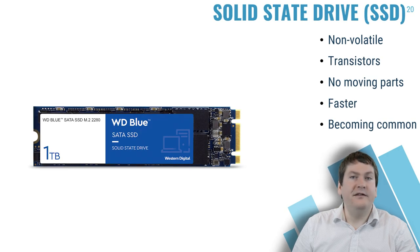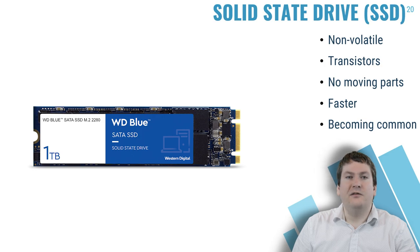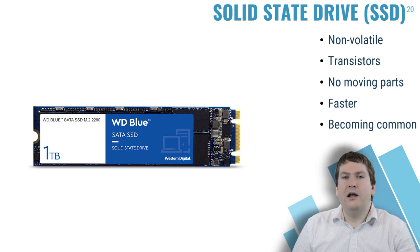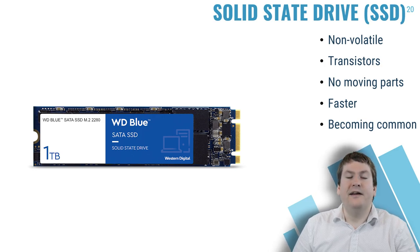Solid-state drives, or SSDs, are becoming more common as they bring the advantage of far faster read speeds. The downside is they have a limited number of writes before they die, though there's been a lot of work to improve this. They also tend to cost more per gigabyte than hard drives. Because of this we often see hybrid approaches, where a computer has both an SSD and a hard disk. Normally in such a setup, applications and the operating system are stored on the SSD for fast access, while documents and media — movies, photos — are stored on the hard disk.